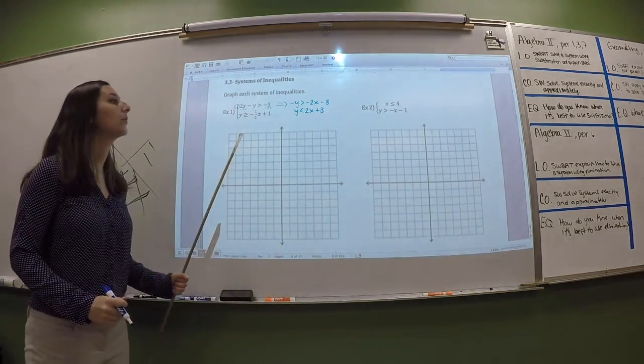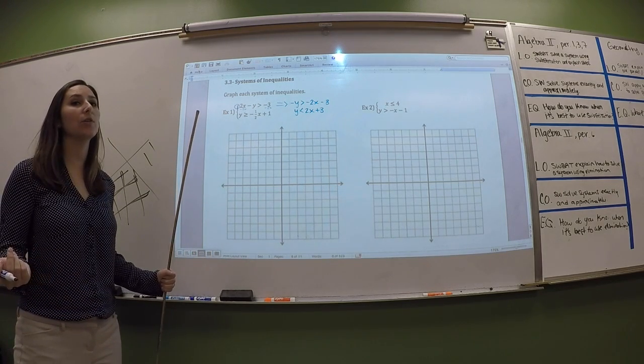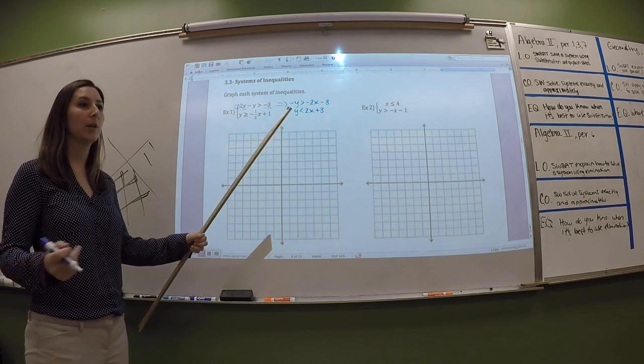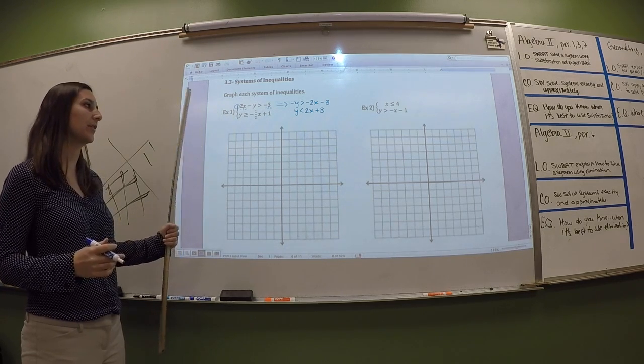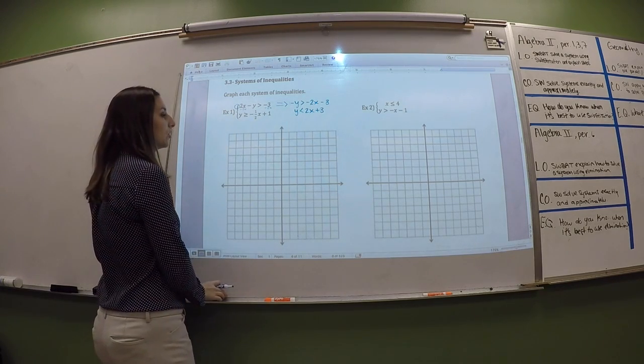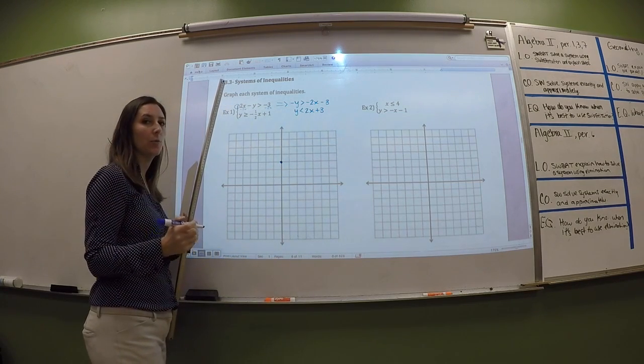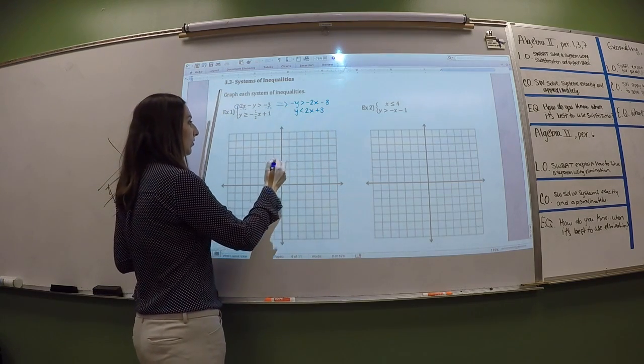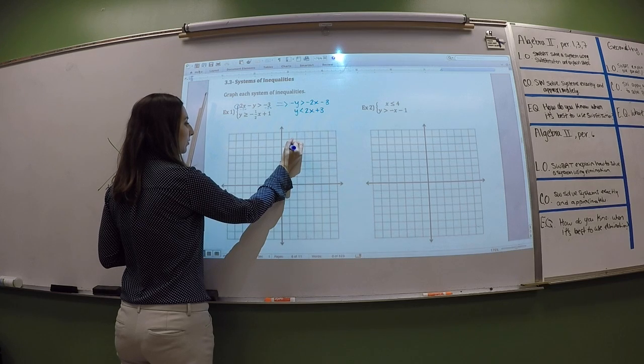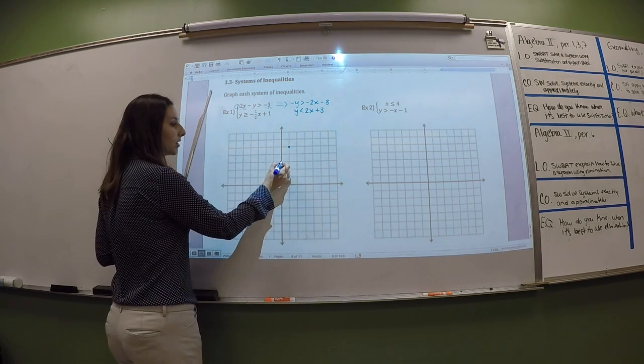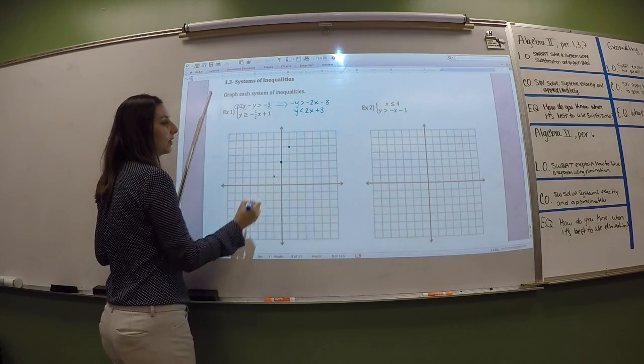You can graph it now or you can graph it later. I'm going to graph it now. Well, actually, that one's already in slope-intercept form, so we might as well graph it now. So we have a y-intercept of 3 and a slope of positive 2. So you can either go up 2 and to the right one or down 2 and to the left one.